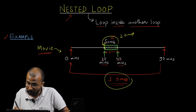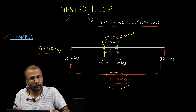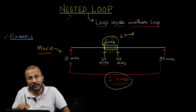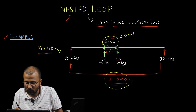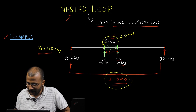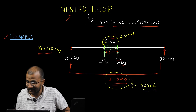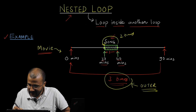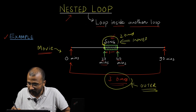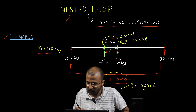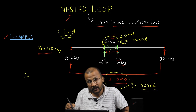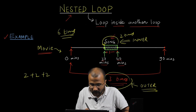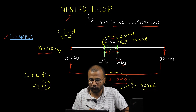This is called nesting of loops. You already have a loop repeating your movie three times, and while doing that, whenever you reach the song, you play it one more time. The loop that runs three times is the outer loop, taking care of how many times the movie plays. The inner loop takes care of how many times to play the song. In total, the song is played six times — two times for each of the three movie iterations.